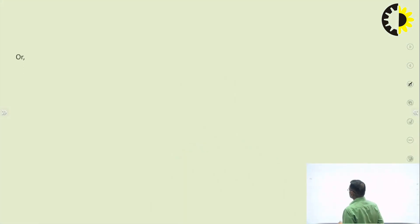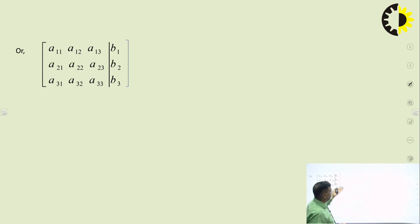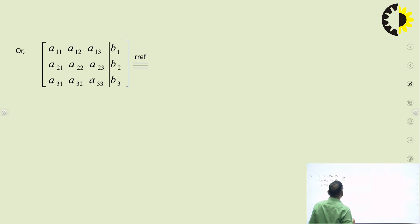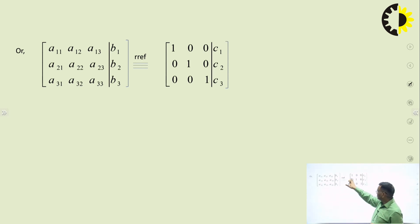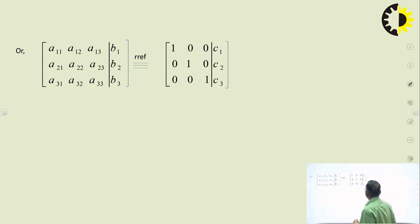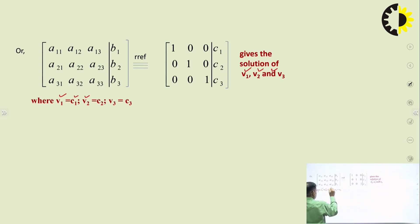Our job is to find the values of b1, b2, b3 by applying the row reduction method. We write the matrix and convert it to reduced row echelon form. If you apply Kirchhoff's voltage law, b1, b2, b3 are voltages; if you apply Kirchhoff's current law, they are current values. After applying row reduction, we get C1, C2, C3 which give the values of b1, b2, b3 respectively.